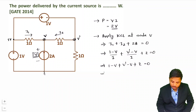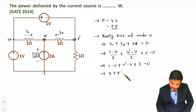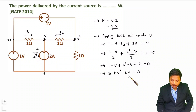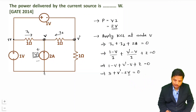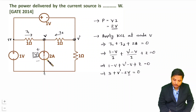So 3 plus V dash minus 2V equals 0. We want the value of V, but there is an unknown quantity V dash. So let us find the value of V dash first, and then we will get V and be able to calculate the power delivered by the current source.